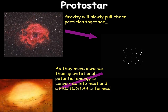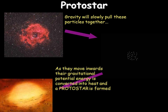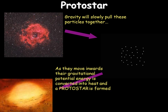Our Sun and all other stars are formed from dust clouds which are pulled together under gravity, and they are called protostars. As they move inwards, the gravitational potential energy is converted into heat and a protostar is formed.